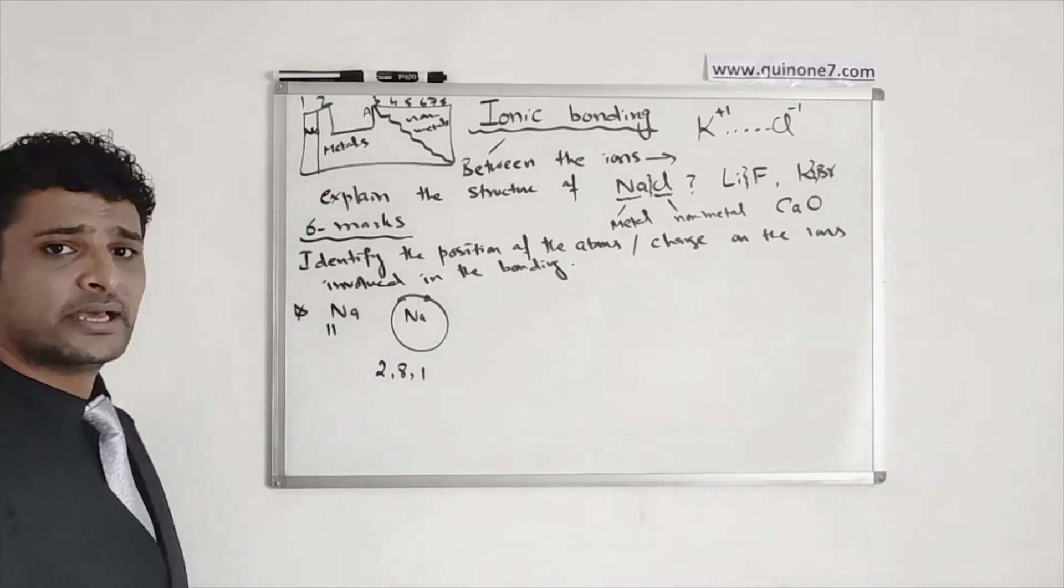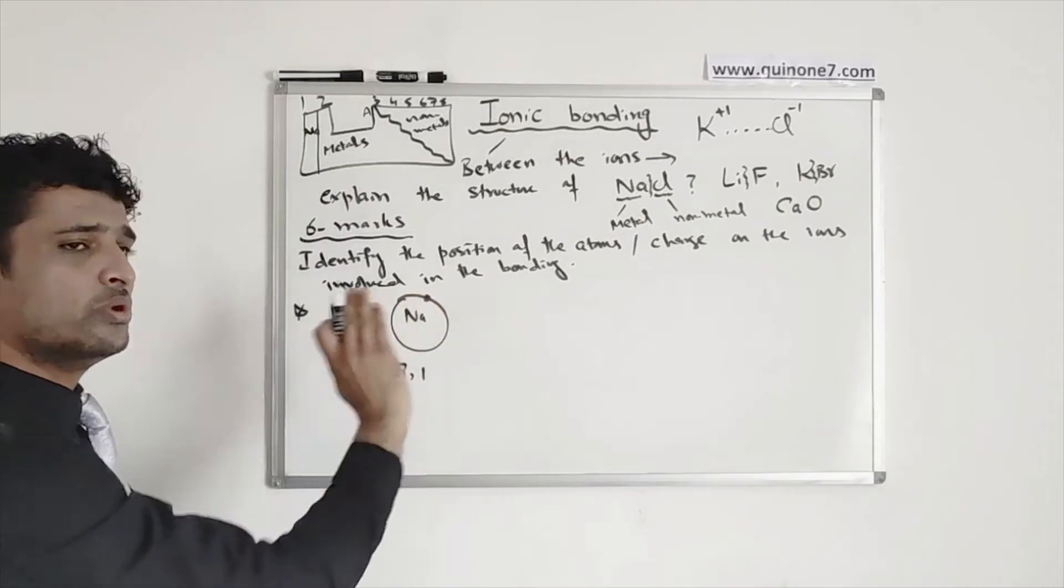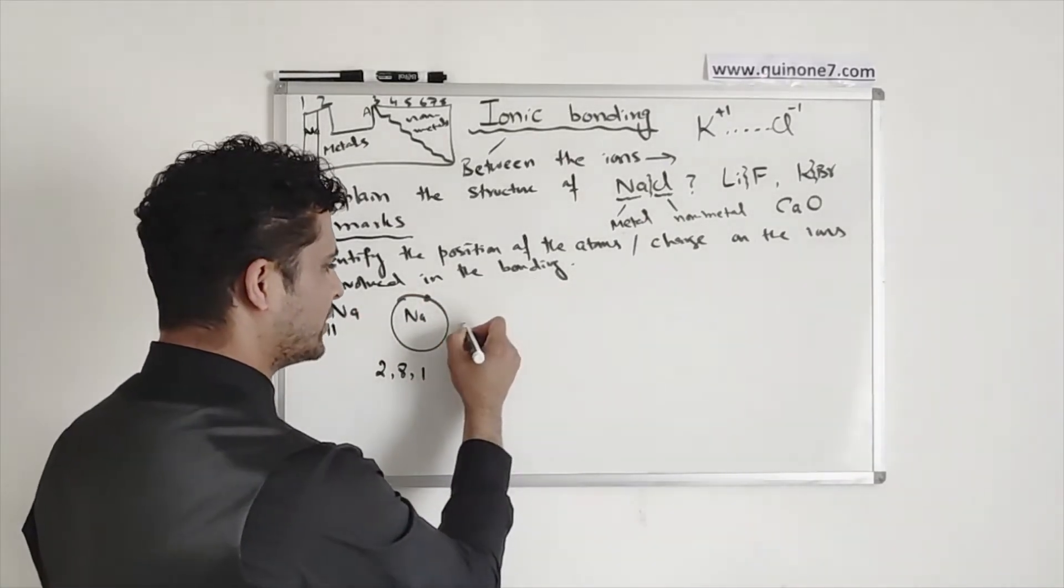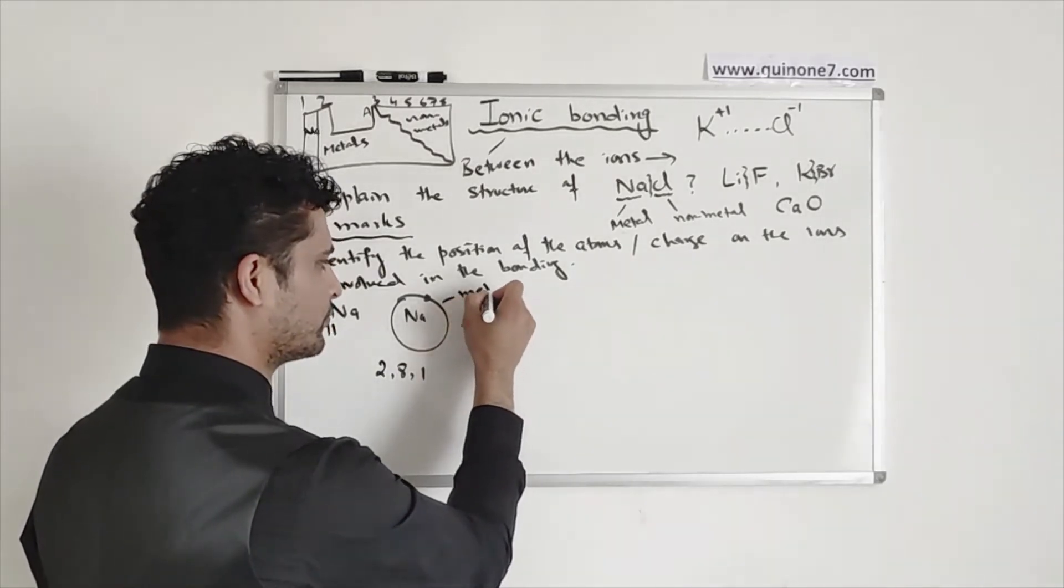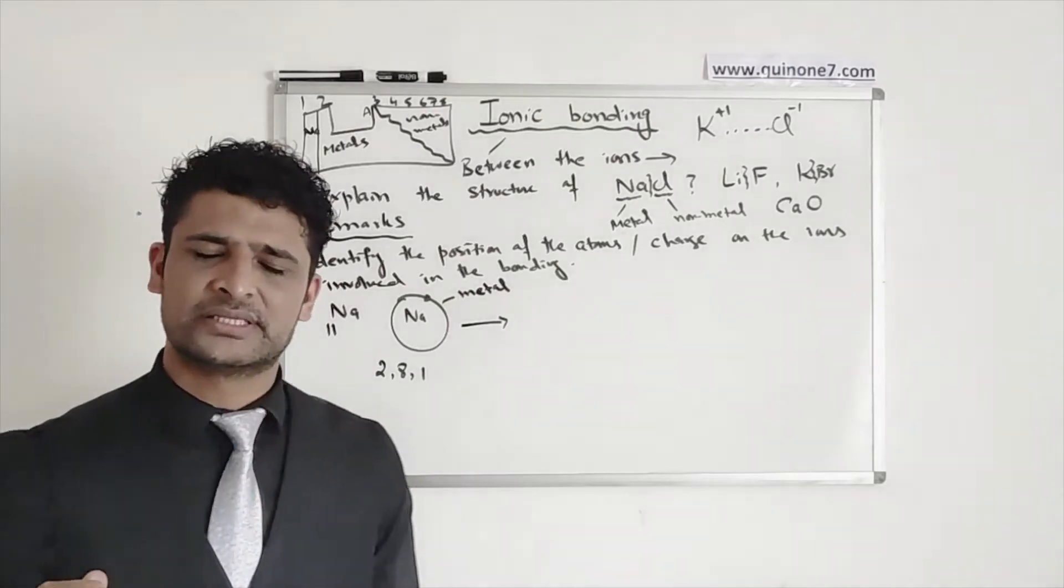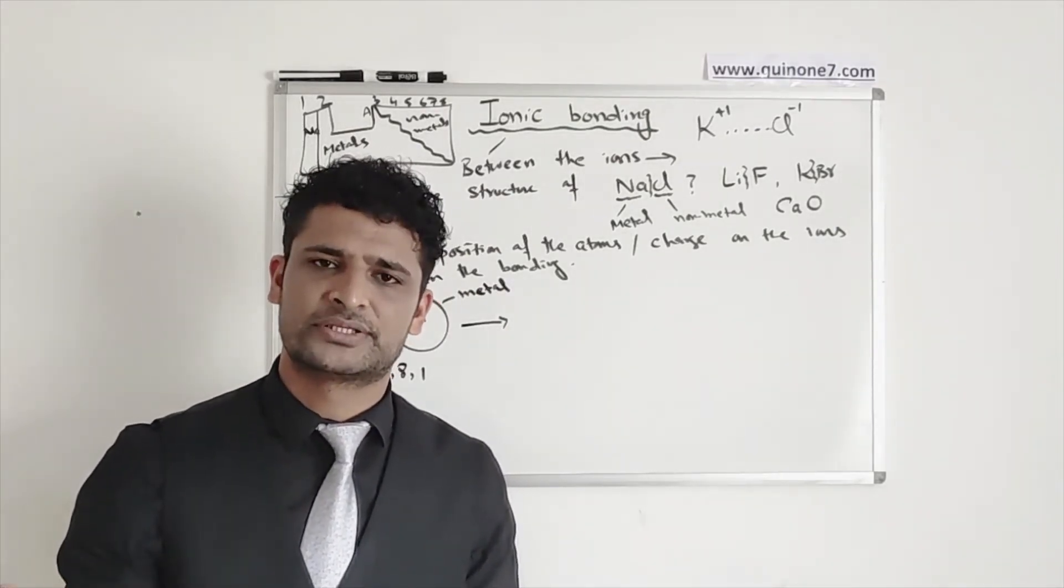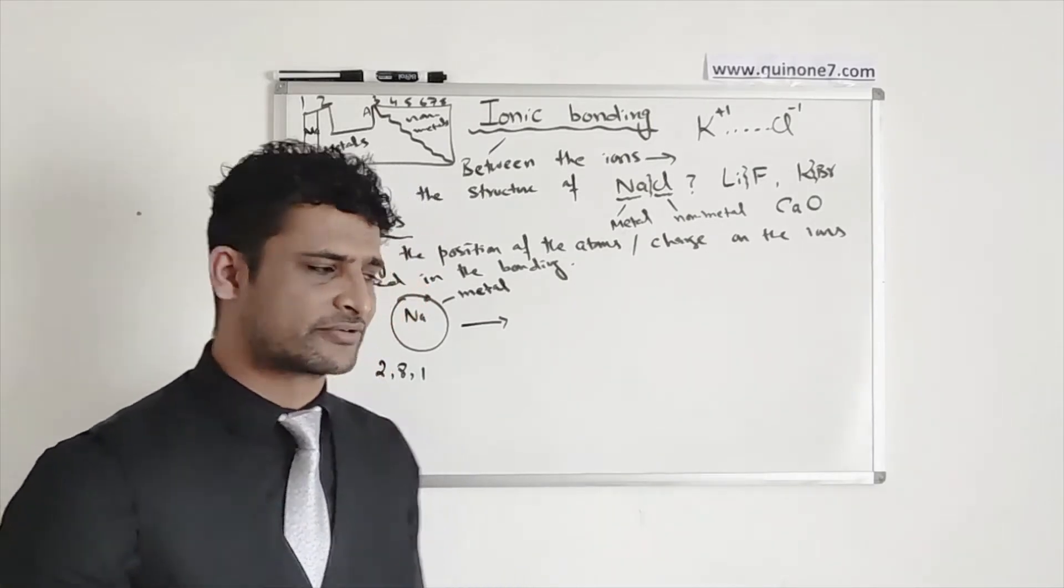So all of these atoms in group 1, the first column, they all end up having one electron in the last shell. Then you will look at that this sodium, because it's a metal, all the metals actually prefer to make positive ions. Plus 1, plus 2, plus 3. It depends how many electrons they have in the outer shell and how easily they can lose those electrons.